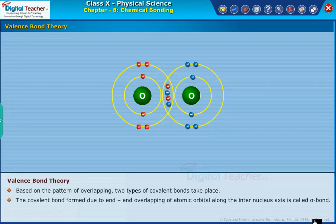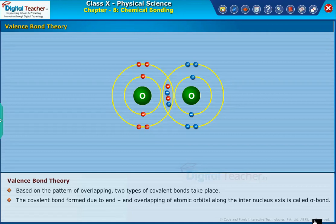The covalent bond formed due to end-to-end overlapping of atomic orbitals along the internuclear axis is called a sigma bond. It is a stronger bond because the electrons are strongly attracted by the nuclei of bonding atoms.